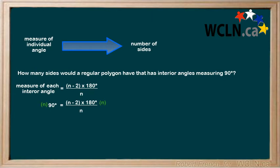Multiply both sides by n to cancel the n in the denominator. Expand out your brackets by using the distributive rule.